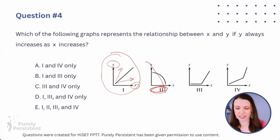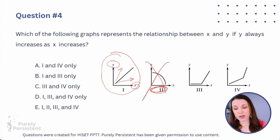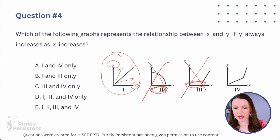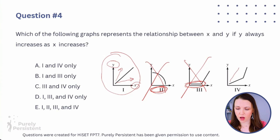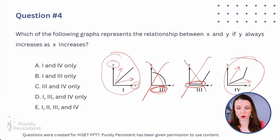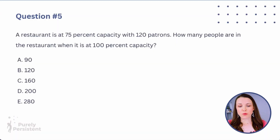In graph three, x is always moving forward but y stays flat — it doesn't increase — so that's not it. In graph four, y is always going up, even if not evenly — it's still always increasing — and x is always going to the right. So graphs one and four both qualify. Looking at the answer choices, option A includes graphs one and four — so A is our answer.